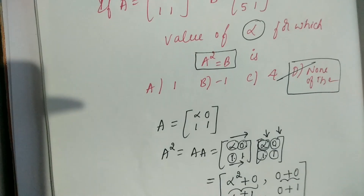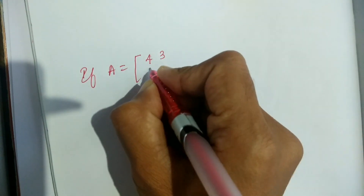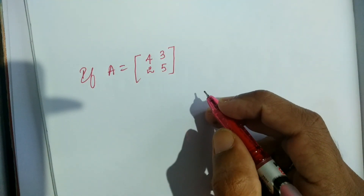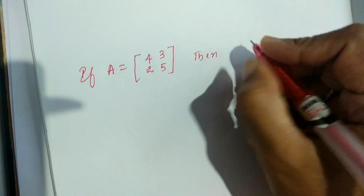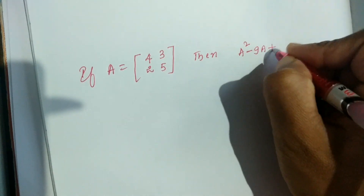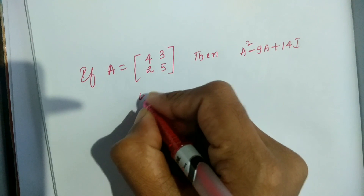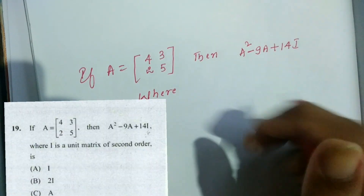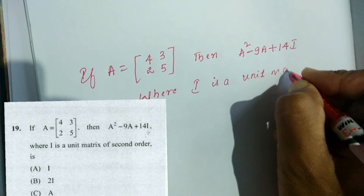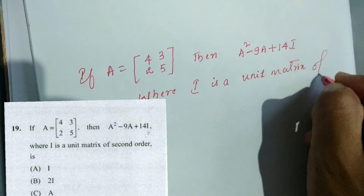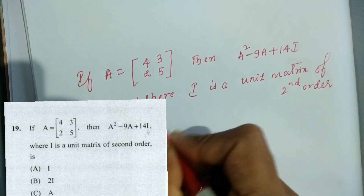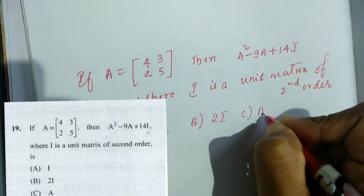Next question: If A = [4, 3; 2, 5], then find A² − 9A + 14I, where I is the identity matrix of second order. Option A: I, Option B: 2I, Option C: A, Option D: 0.